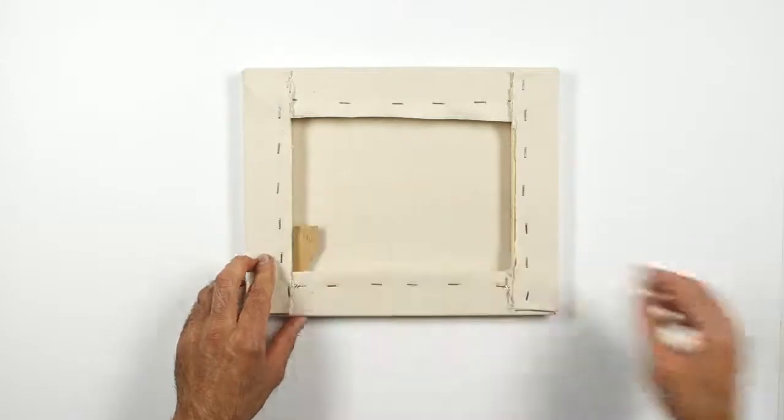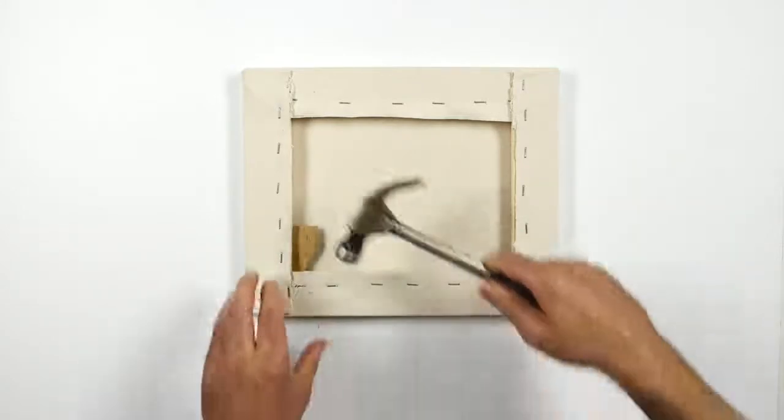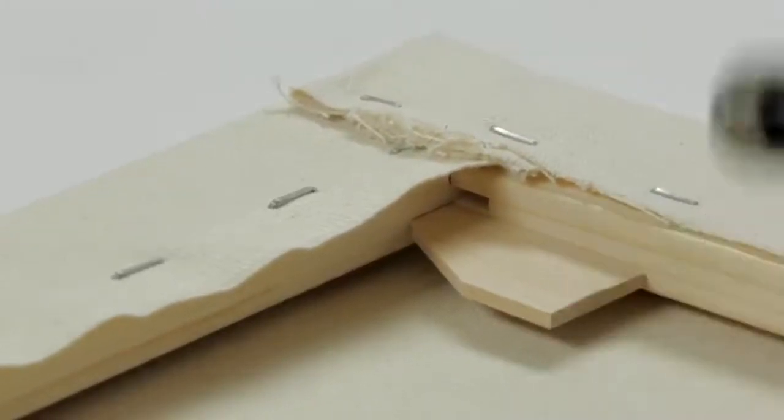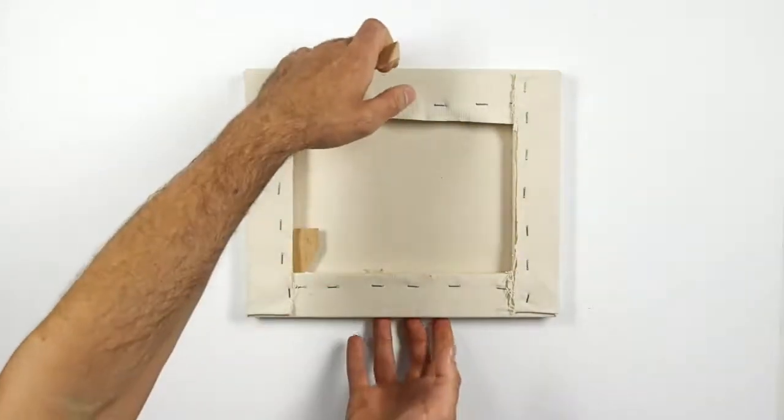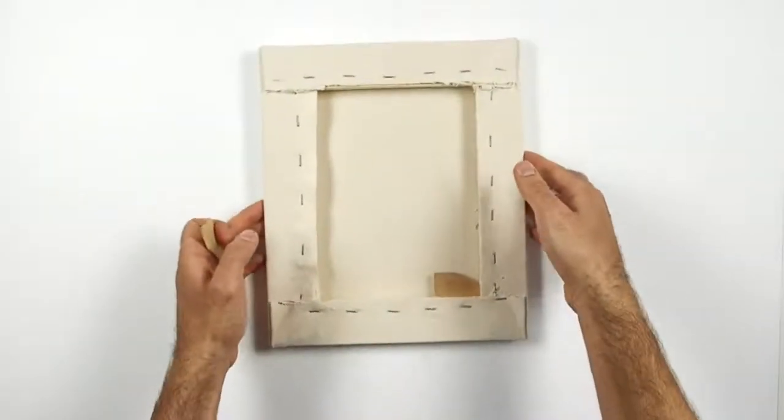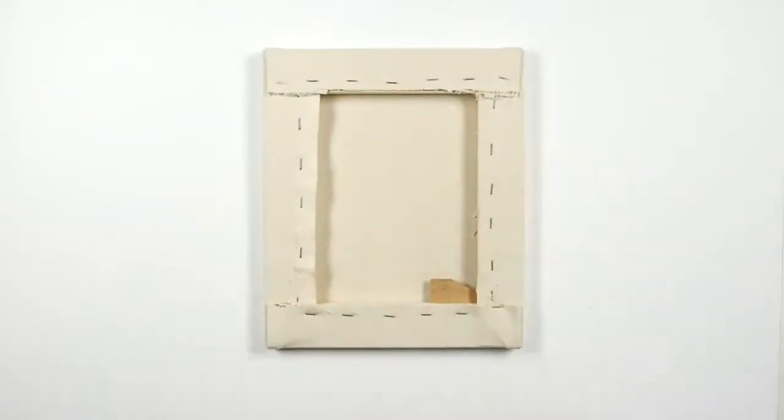These will either be supplied with your stretchers or you may have to ask for some when buying. Using a hammer, tap the wedge closest to the canvas surface in first, then rotate your canvas and tap in the second wedge. Repeat this for all four corners.